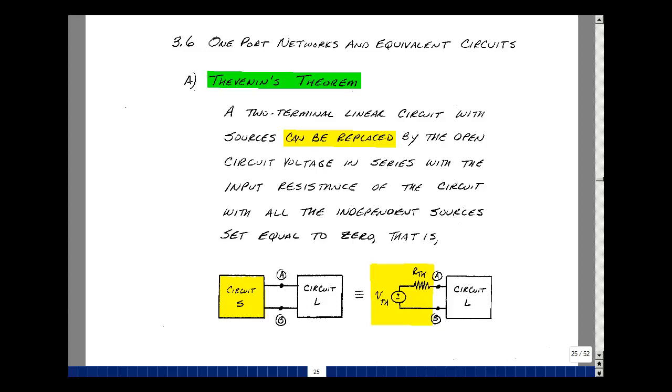Let me state Thevenin's Theorem. A two-terminal linear circuit with sources can be replaced by the open circuit voltage in series with the input resistance of the circuit with all of the independent sources set equal to zero. Well, that's a mouthful. Let me do this in terms of pictures.